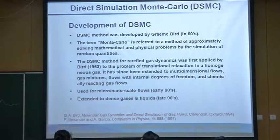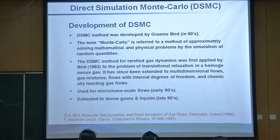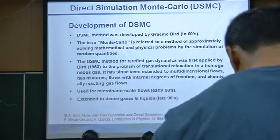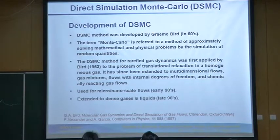Just a little bit about the development of DSMC — it was developed by Graham Bird in the 1960s, and the first test case was done probably in 1963 on the shock structure. The term Monte Carlo is interesting — it refers to any method which involves random numbers in representing the physics of any problem.